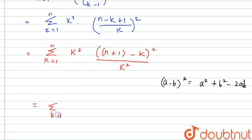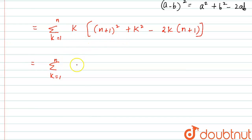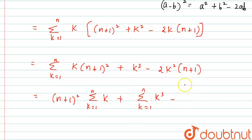Applying (a-b)² = a² + b² - 2ab with a = n+1 and b = k, the expression becomes summation k=1 to n of k·[(n+1)² + k² - 2k(n+1)]. Multiplying k inside, this equals summation k=1 to n of [k(n+1)² + k³ - 2k²(n+1)]. Since (n+1) is constant with respect to k, we split the summation into three parts.